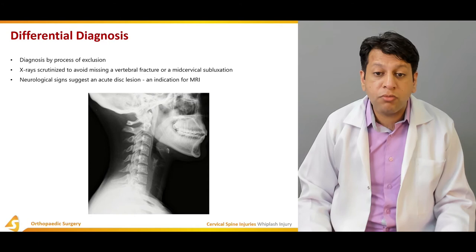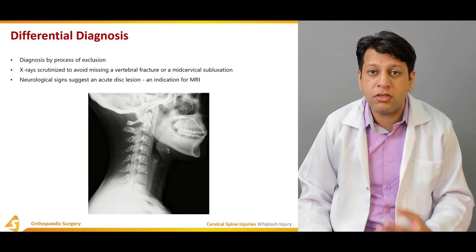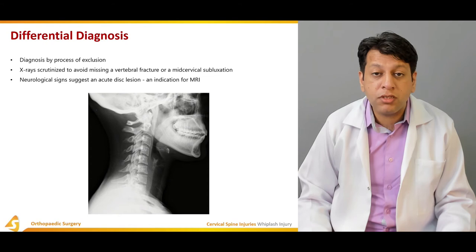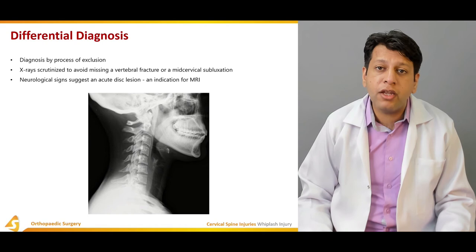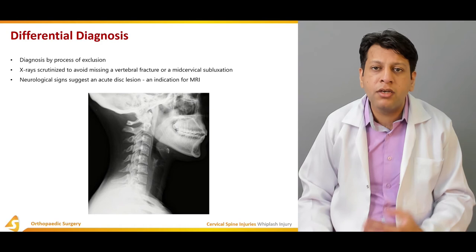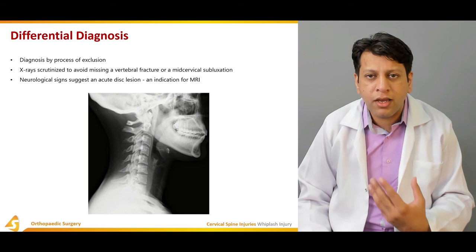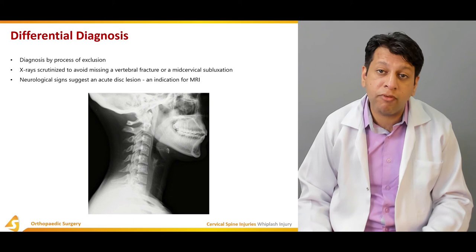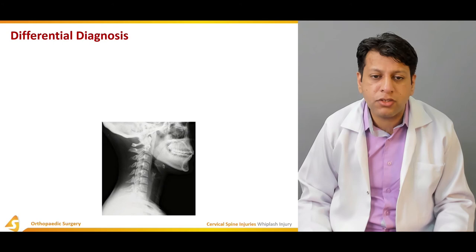There could be disc lesions such as herniation of the disc at the cervical level as well. So there are different differentials which need to be kept in mind — vertebral fractures, mid-cervical subluxation, and disc lesions. Whiplash injury is essentially a diagnosis of exclusion. With a classical clinical history where the car was hit from behind, and the patient reports first neck hyperextension then hyperflexion, we can most likely diagnose that the patient has suffered a whiplash injury.